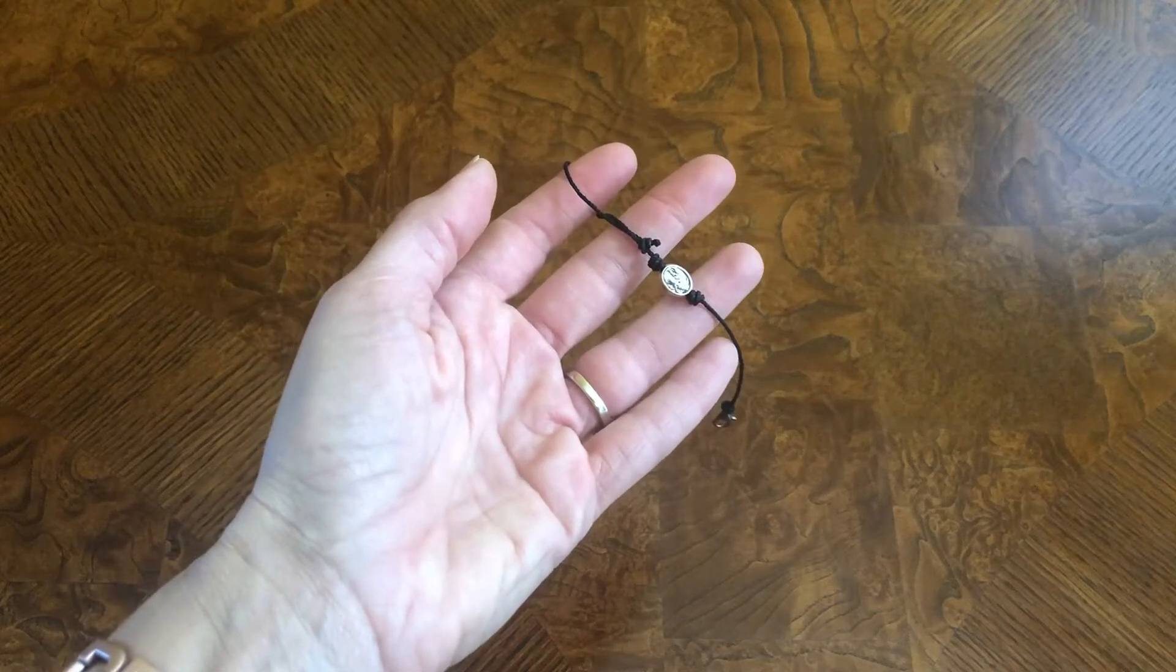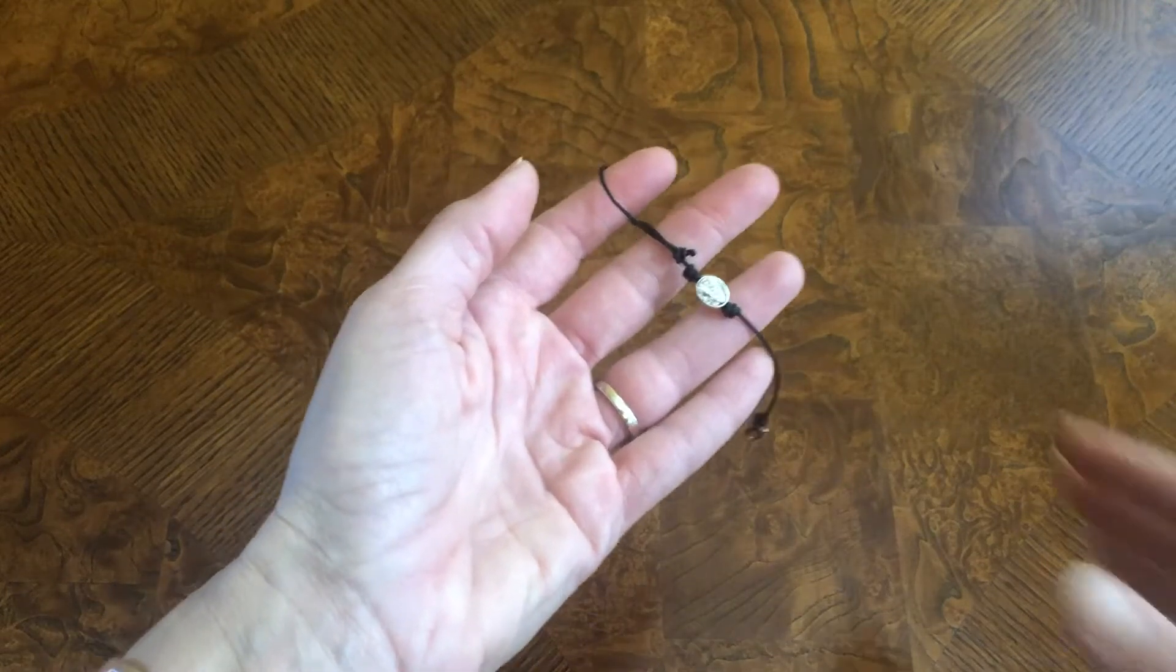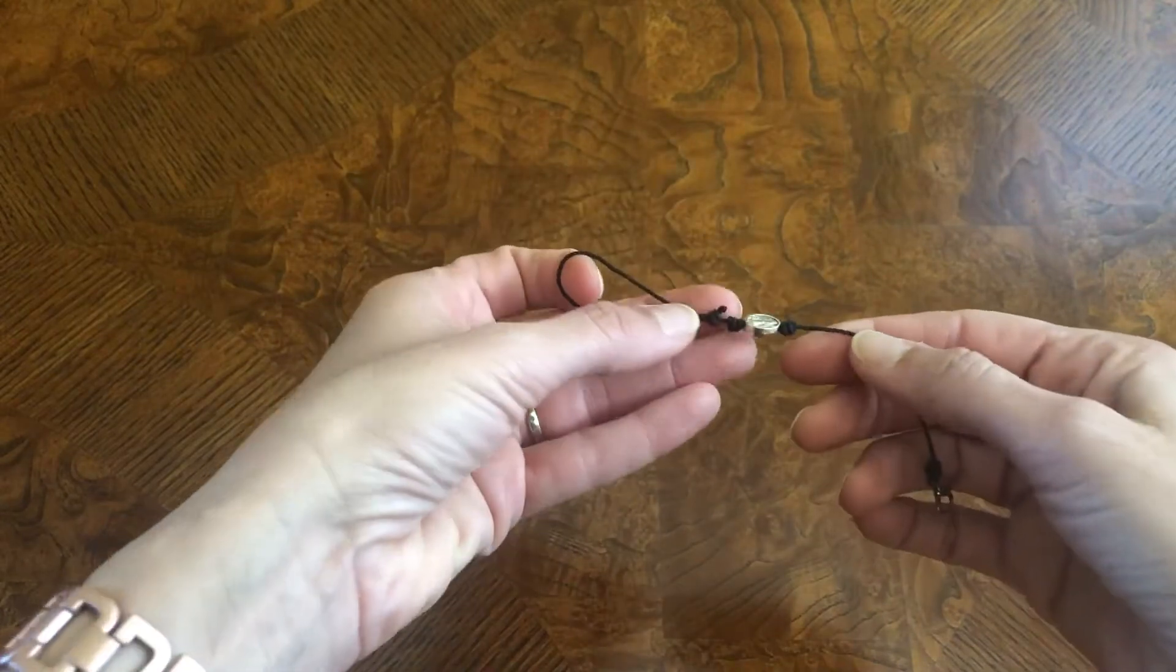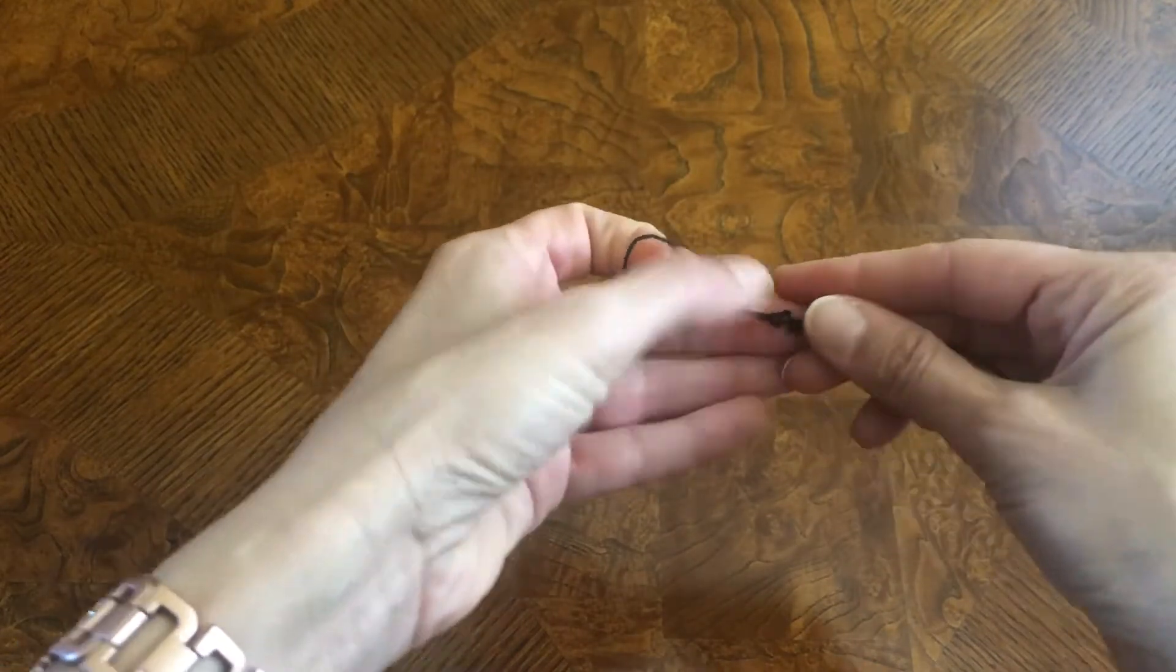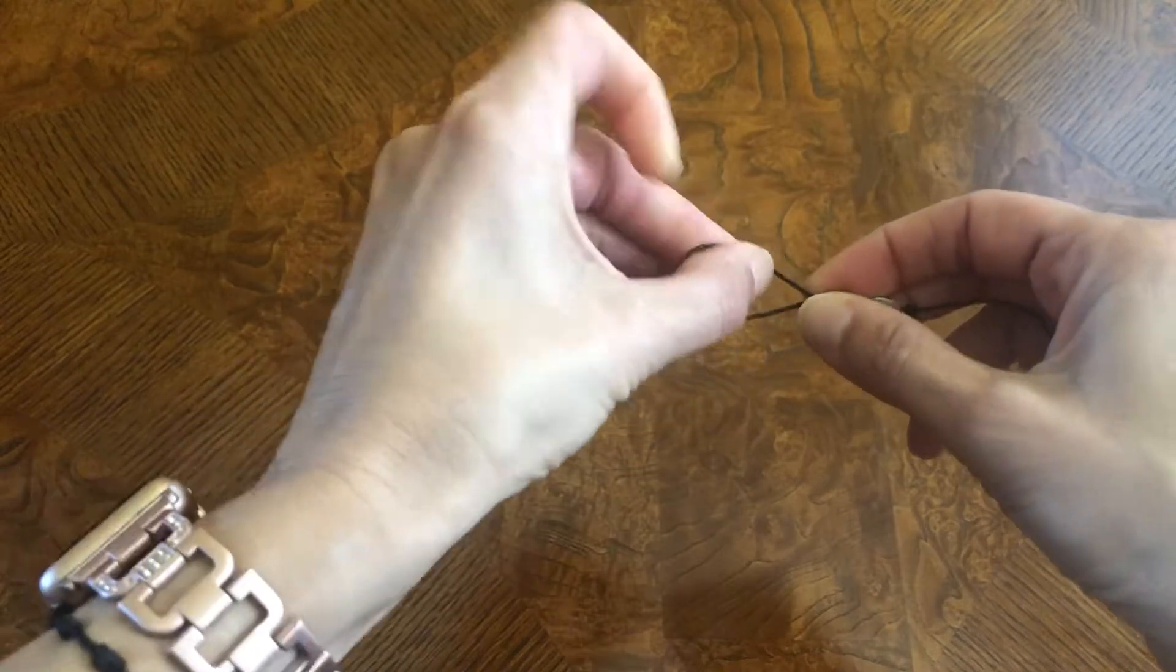This video shows you how to adjust a prayer partner bracelet. When you receive the bracelet, you will see that on one side of the metal there are two knots. They may even be touching like that when you receive it, but you can see there's definitely two knots.